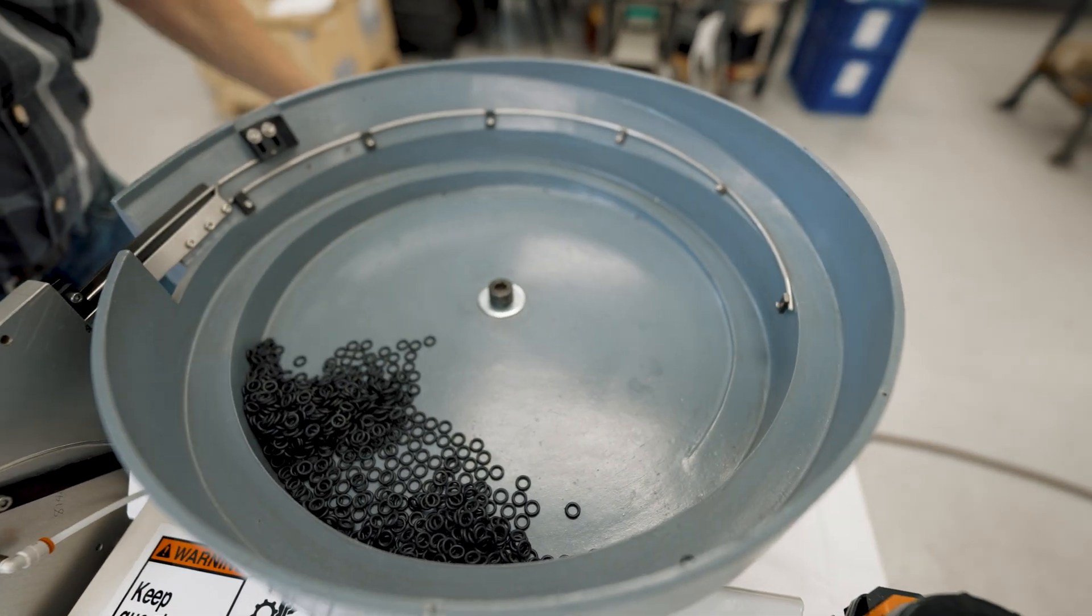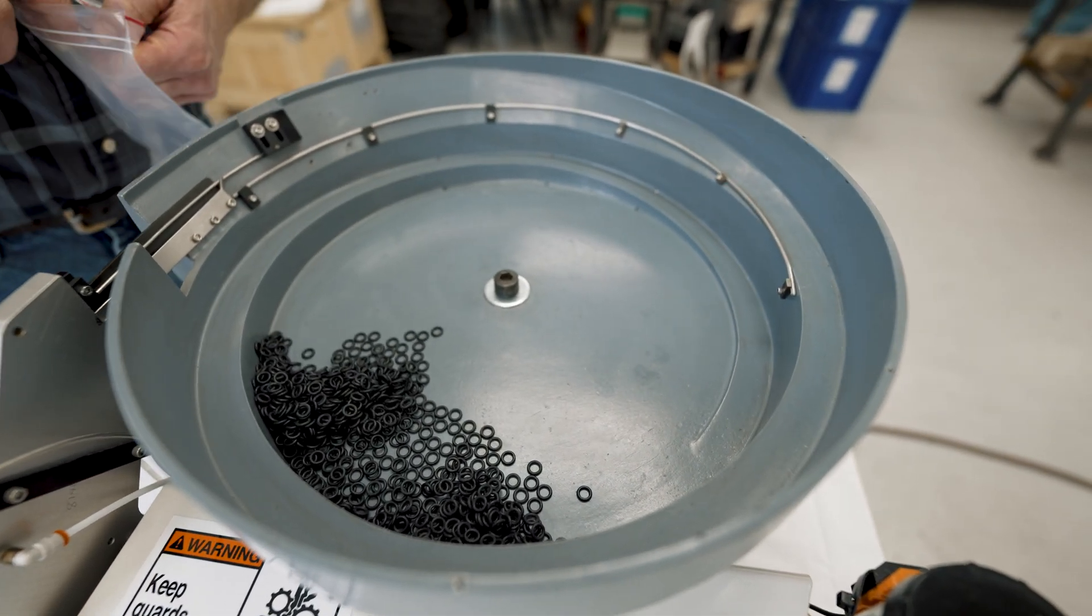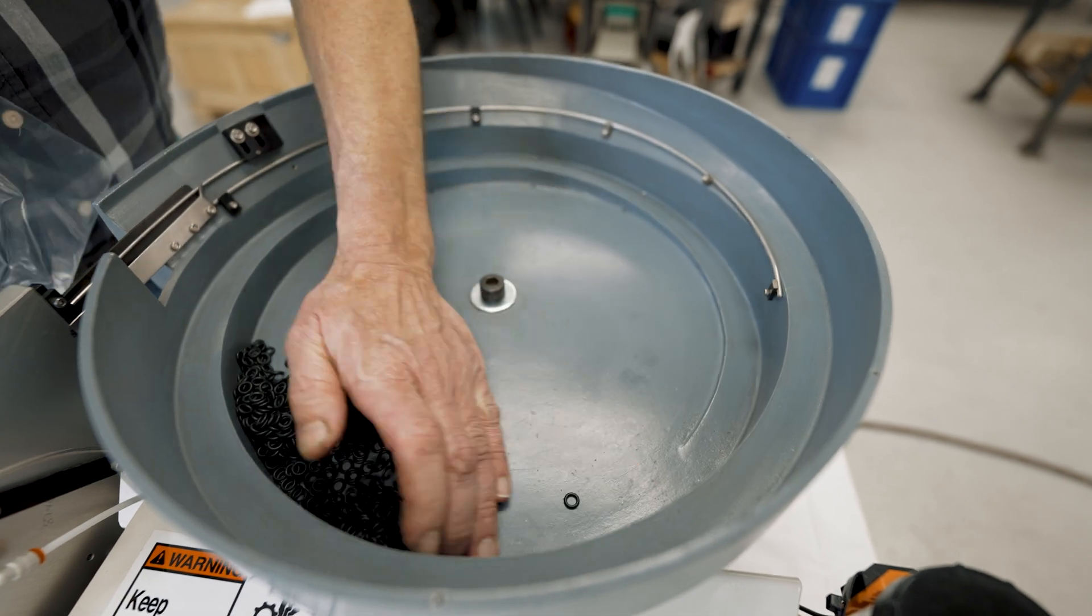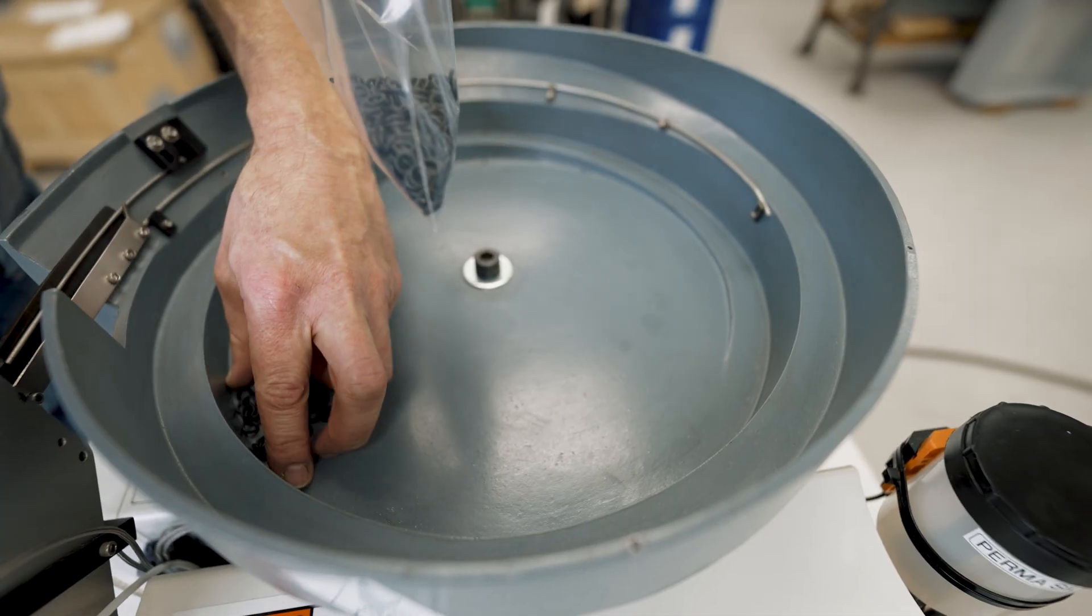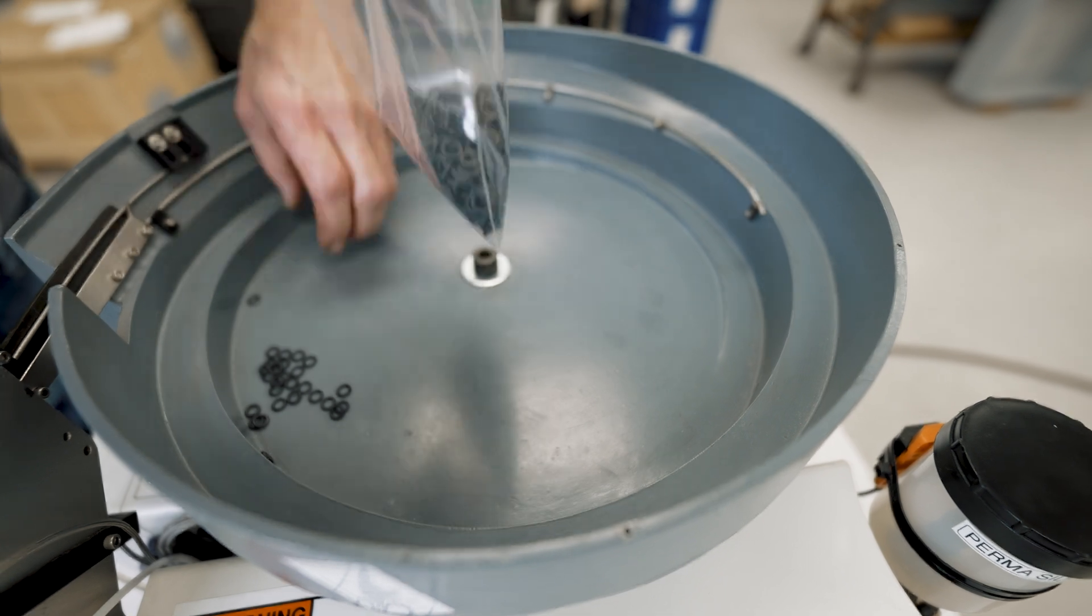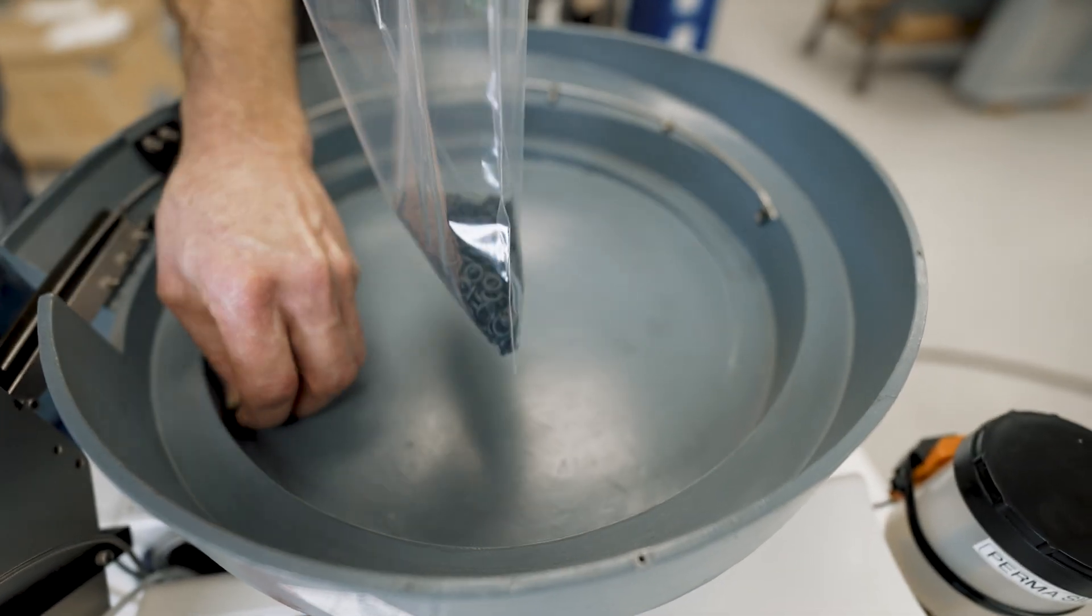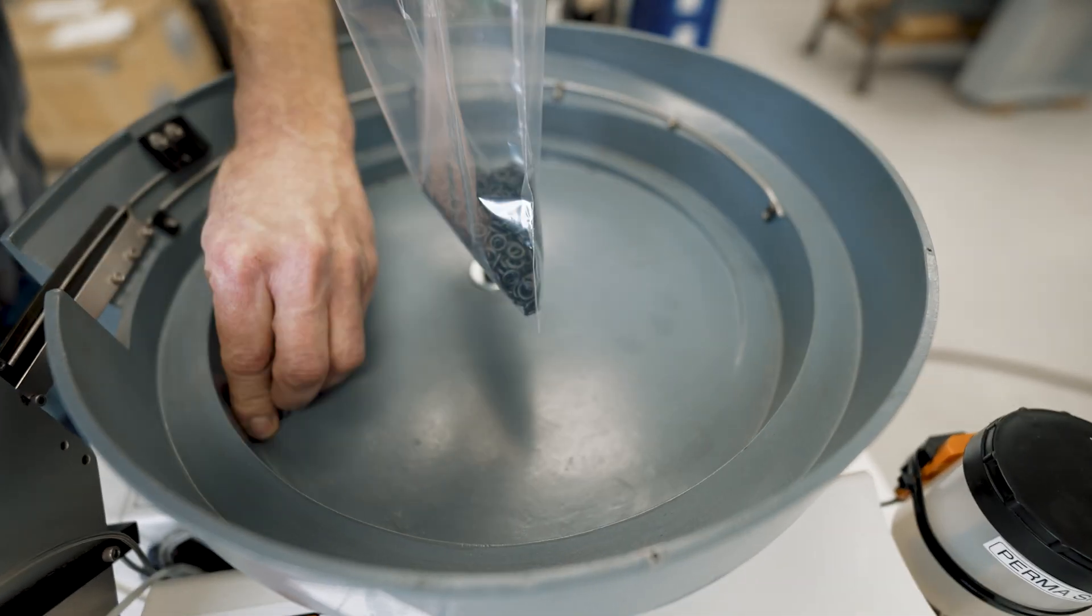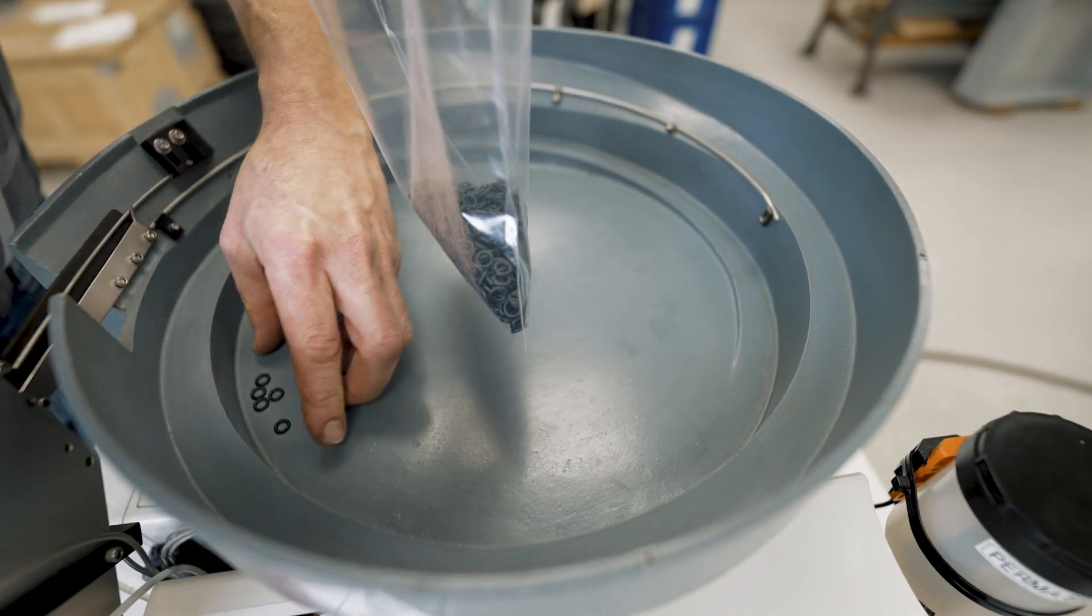Then we can just use a baggie or whatever container you've got your other O-rings in. Some of our customers like a dedicated vacuum cleaner. Something you're not going to use on dirt but you can use it on the O-rings, and that's a very quick way if you're doing a lot of changeovers.